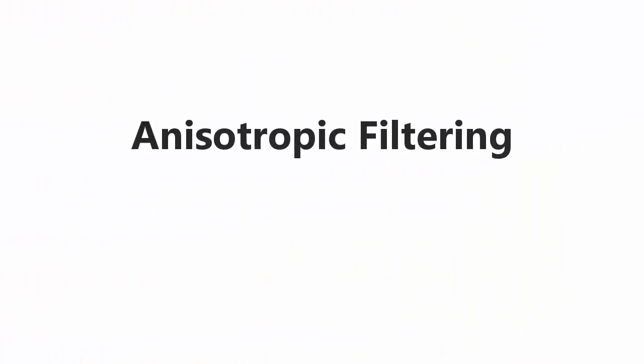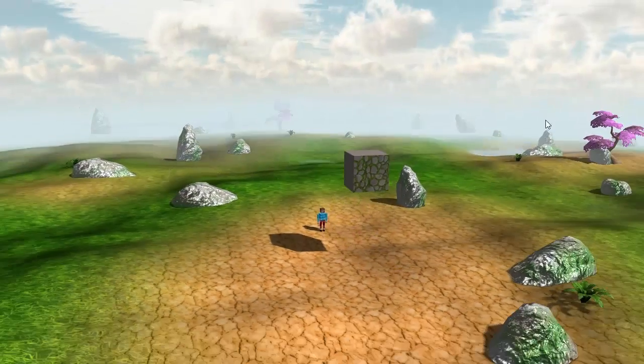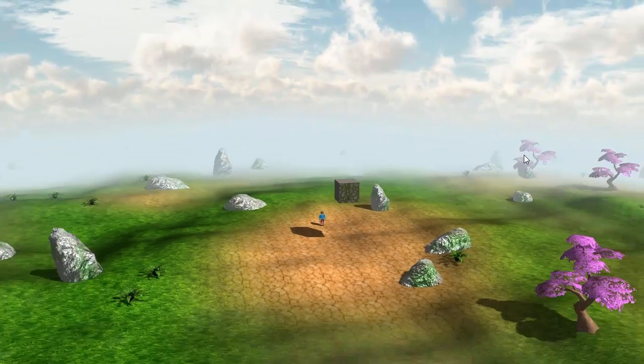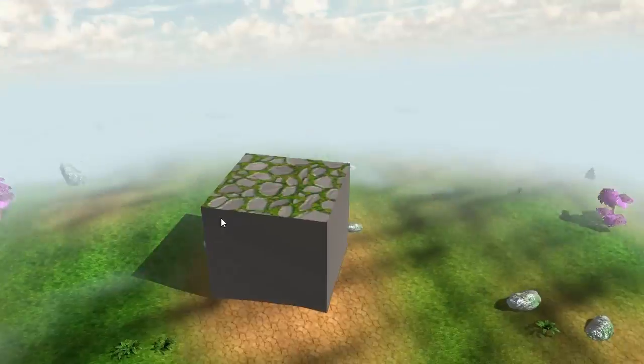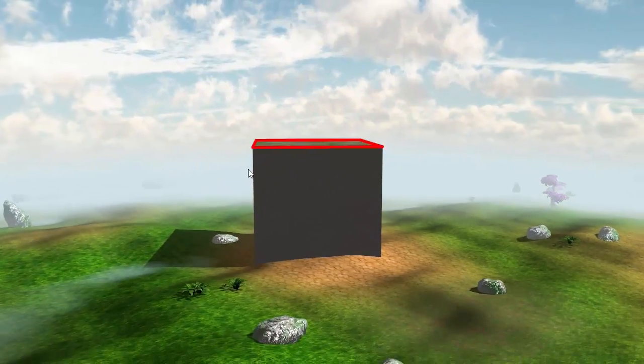We're going to be starting off with Anisotropic Filtering, and this is basically just an improved version of mipmapping, which we implemented way back in episode 20. Mipmapping uses lower resolution versions of a texture when the surface being textured takes up less pixels on the screen than the dimensions of the original texture. So this happens when the surface is far away from the camera, or at a steep angle to the camera.